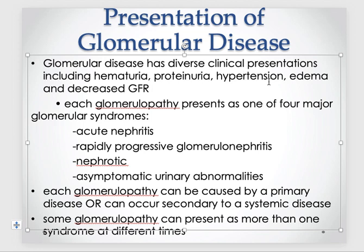Each glomerulopathy presents as one of the major glomerular syndromes. Whenever there is damage to the glomerulus it can present as four syndromes: asymptomatic urinary abnormalities, nephritic syndrome, nephrotic syndrome, and end-stage renal disease. For example, someone's kidneys are damaged and they start having proteinuria or hematuria, but there are no symptoms yet — we call that asymptomatic urinary abnormalities. The second syndrome is nephritic syndrome.